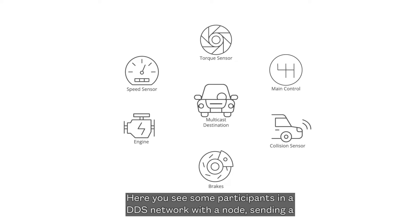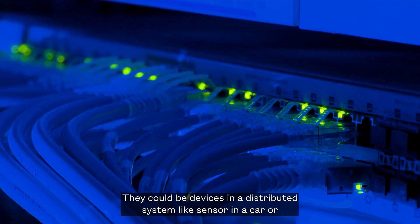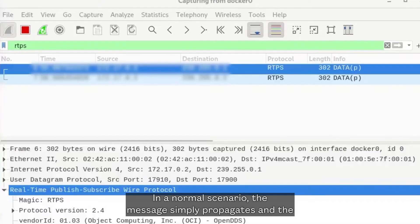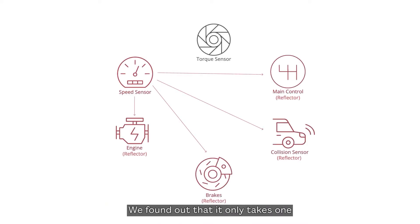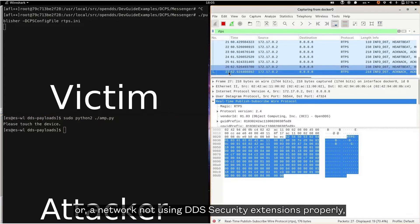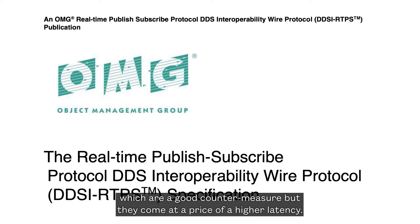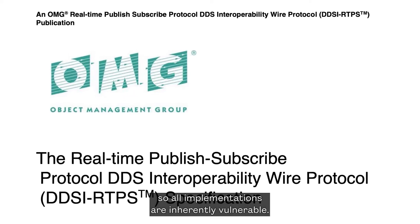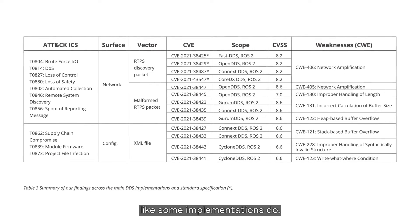Here you see some participants in a DDS network, with a node sending a discovery message to all parties. They could be devices in a distributed system, like sensors in a car or the lights in an airport runway. In a normal scenario, the message simply propagates and the sender receives responses. We found that it only takes one malicious participant to create a network amplification condition, or a network not using DDS security extensions properly — which are a good countermeasure but come at the price of higher latency. This vulnerability leverages a corner case in the DDS standard specifications, so all implementations are inherently vulnerable. This can only be mitigated by limiting outbound throughput, as some implementations do.